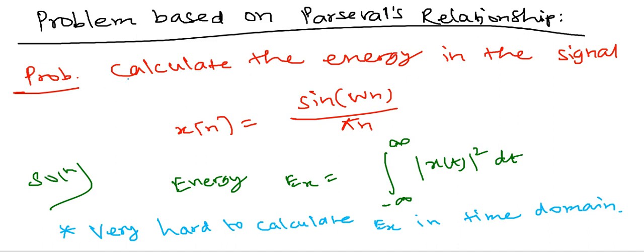Now the problem is calculate the energy in the signal x(n) equal to sin(ωn) divided by πn. So this is a discrete time signal given and we have to calculate its energy.